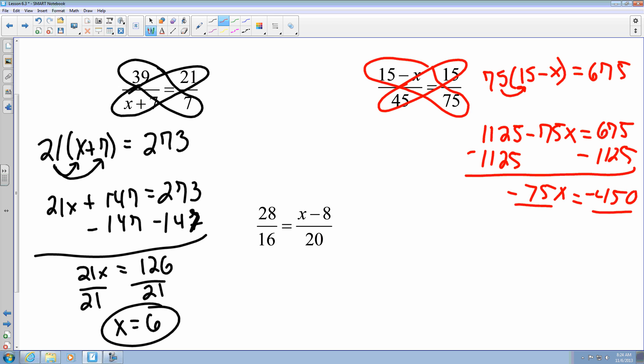And I've got negative 75x here. So now I'm going to take both sides and divide it by negative 75. And negative divided by a negative is going to give me a positive. And it is a positive 6.